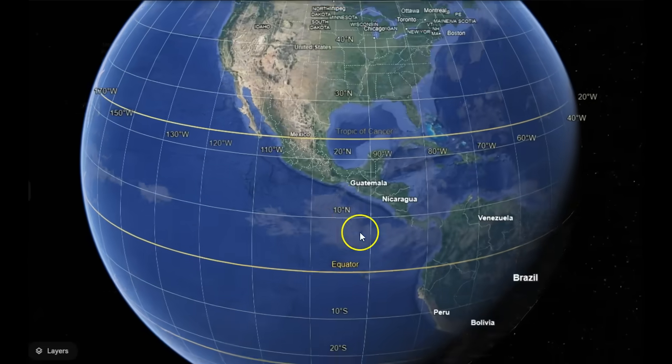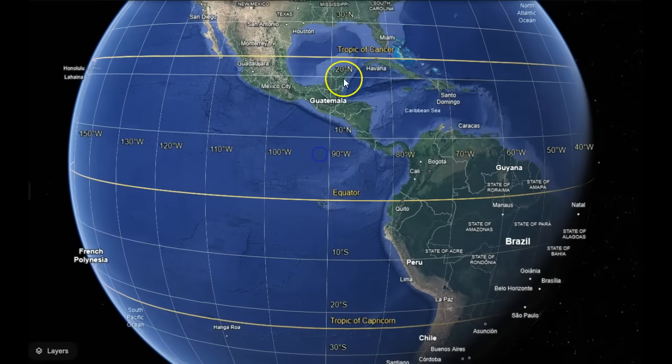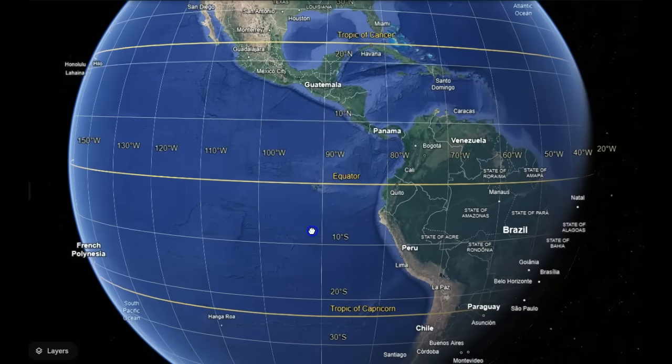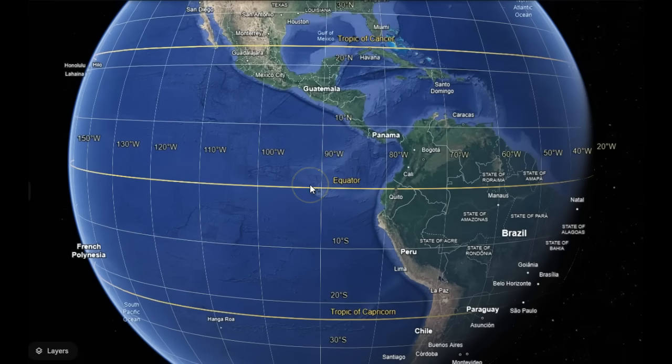Here's the tropic of cancer, the equator, and the tropic of capricorn. The equator normally—and it is always the closest to the sun—that's why it's the hottest place and that's why you have the tropical convergent zone and everything. But the equator is the hottest part of our planet. It's closest to the sun.